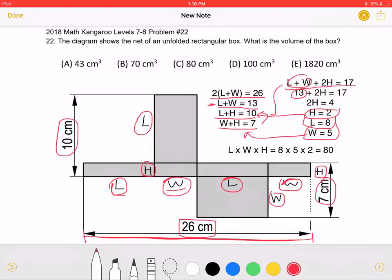Because the problem is asking for the volume of this box, that must be equal to length times width times height, which must be 8 times 5 times 2, which is equal to 80. This means that answer choice C is correct. Thank you so much for watching.